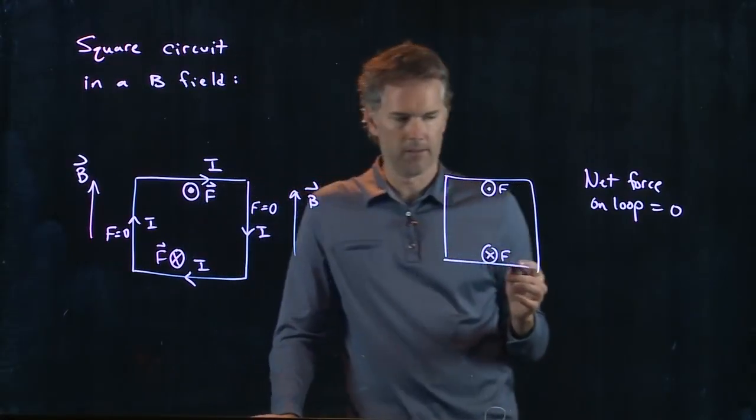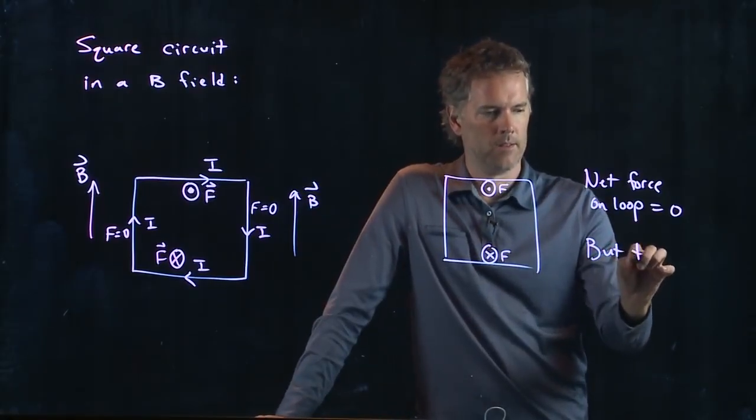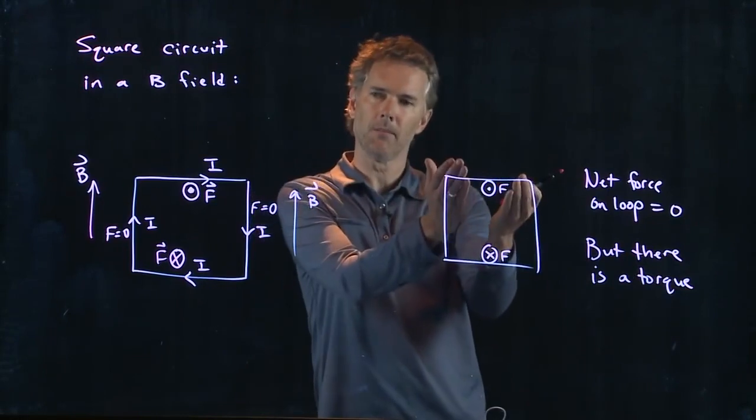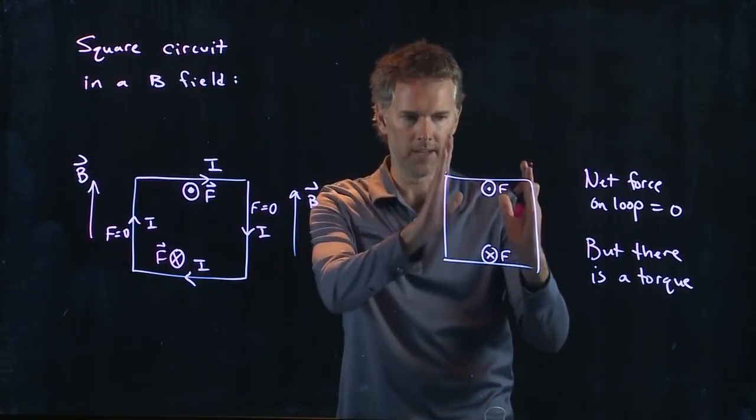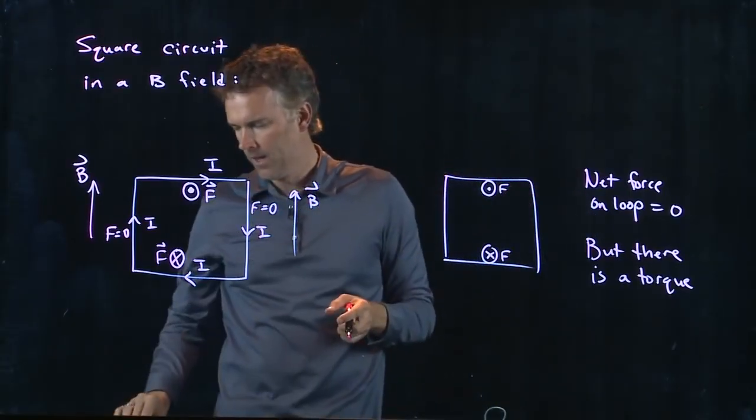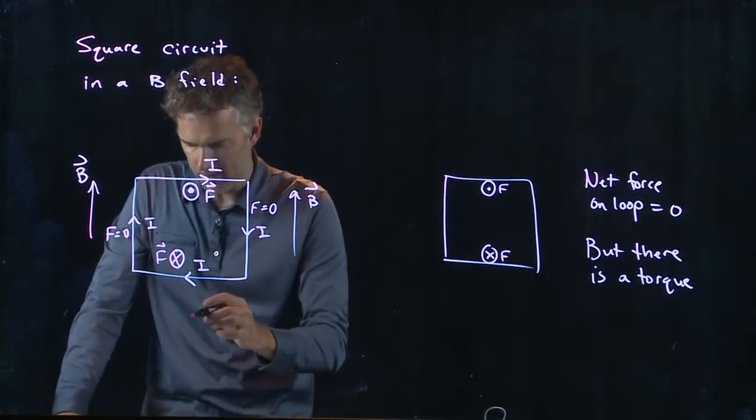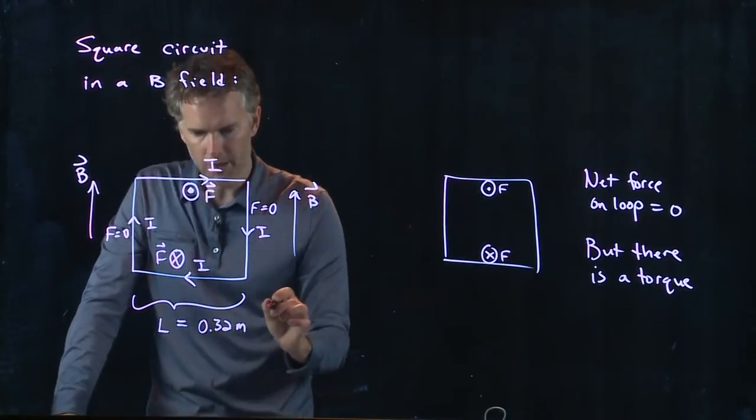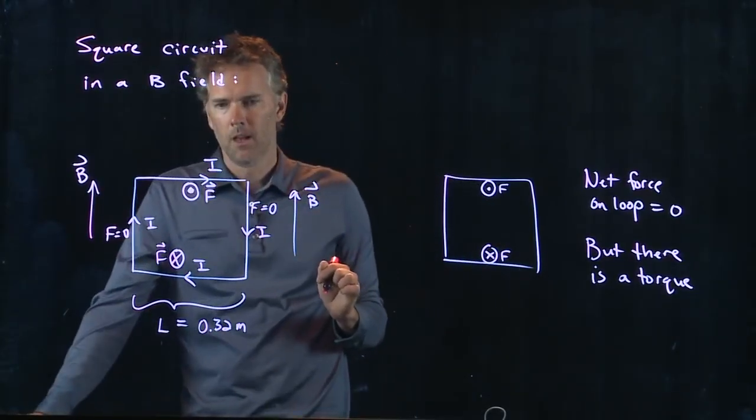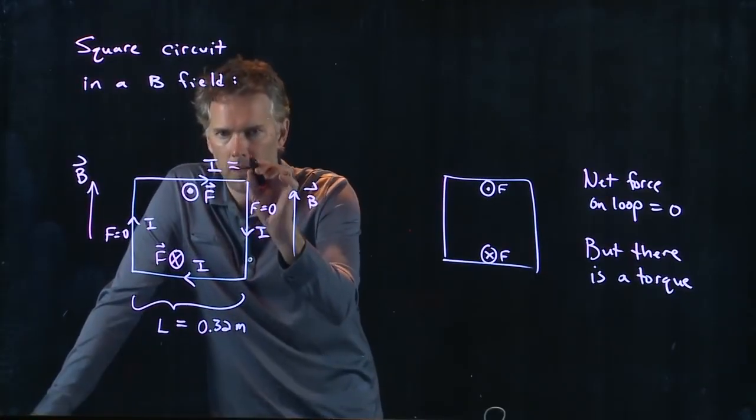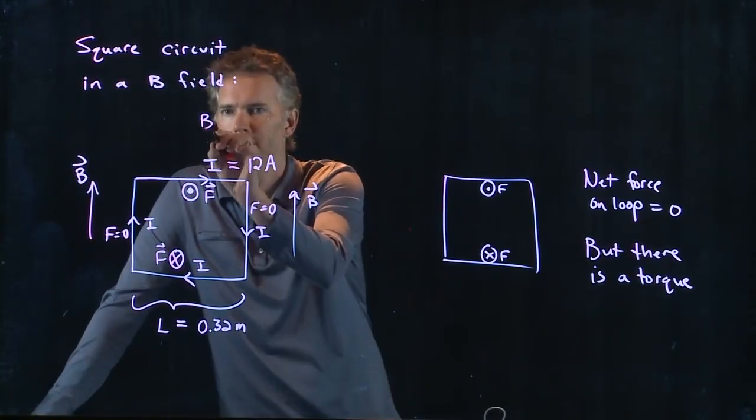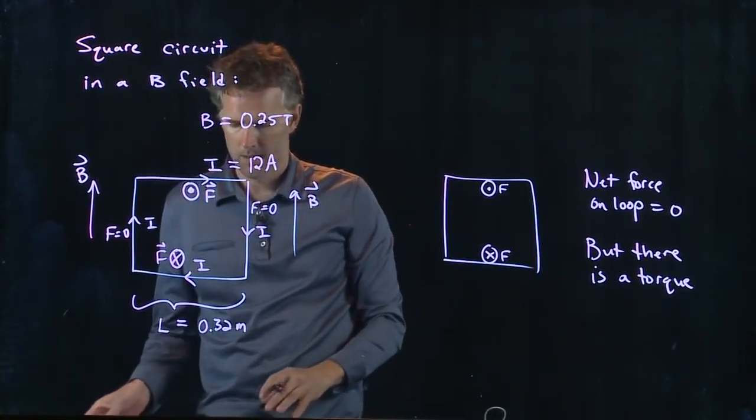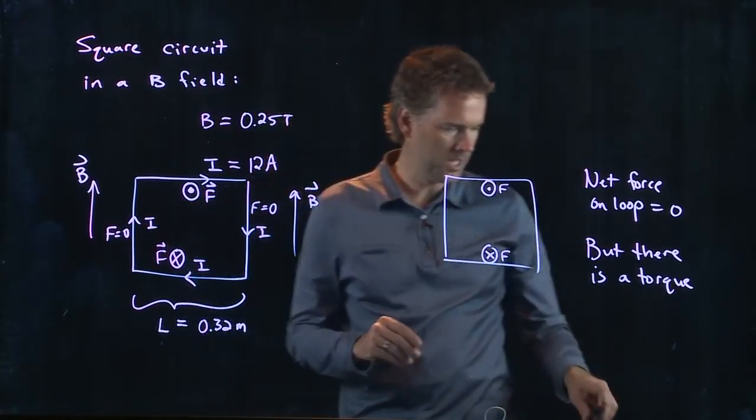There is a torque because one side is trying to come out of the screen, the other side is trying to go into the screen. So this entire thing is going to rotate in this B field. Let's try it with some numbers and see if we can calculate what's happening. This is a square of side L, let's say 32 centimeters, which is 0.32 meters. Let's say the current is 12 amps and the B field is a quarter Tesla. Let's do each side individually and calculate the force on it.